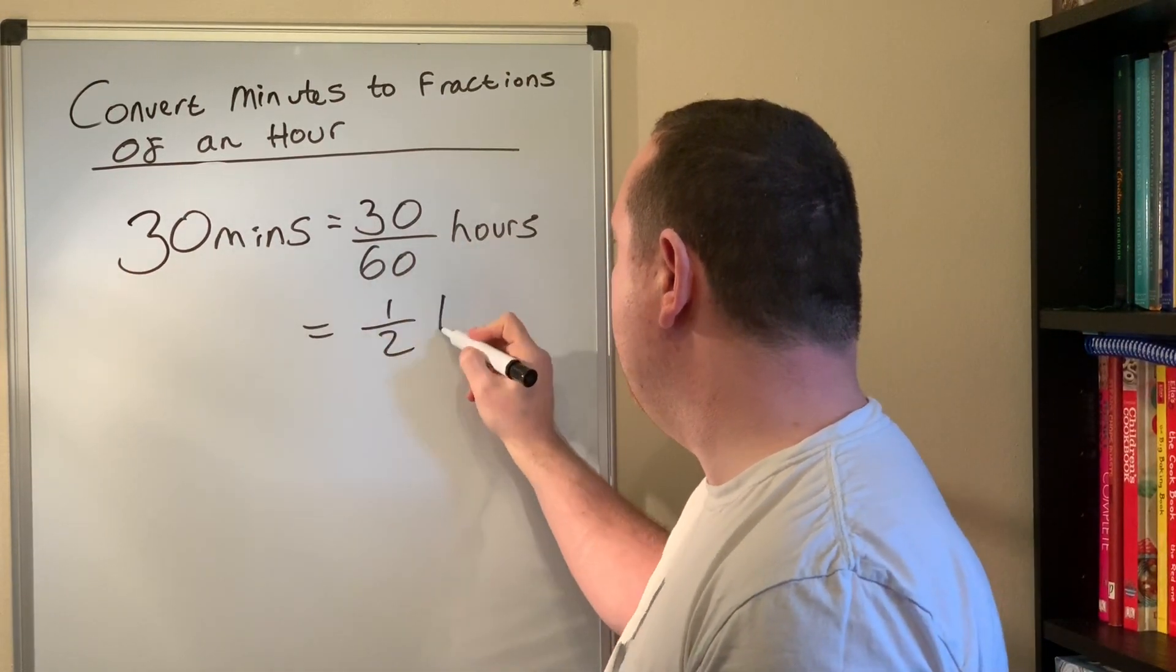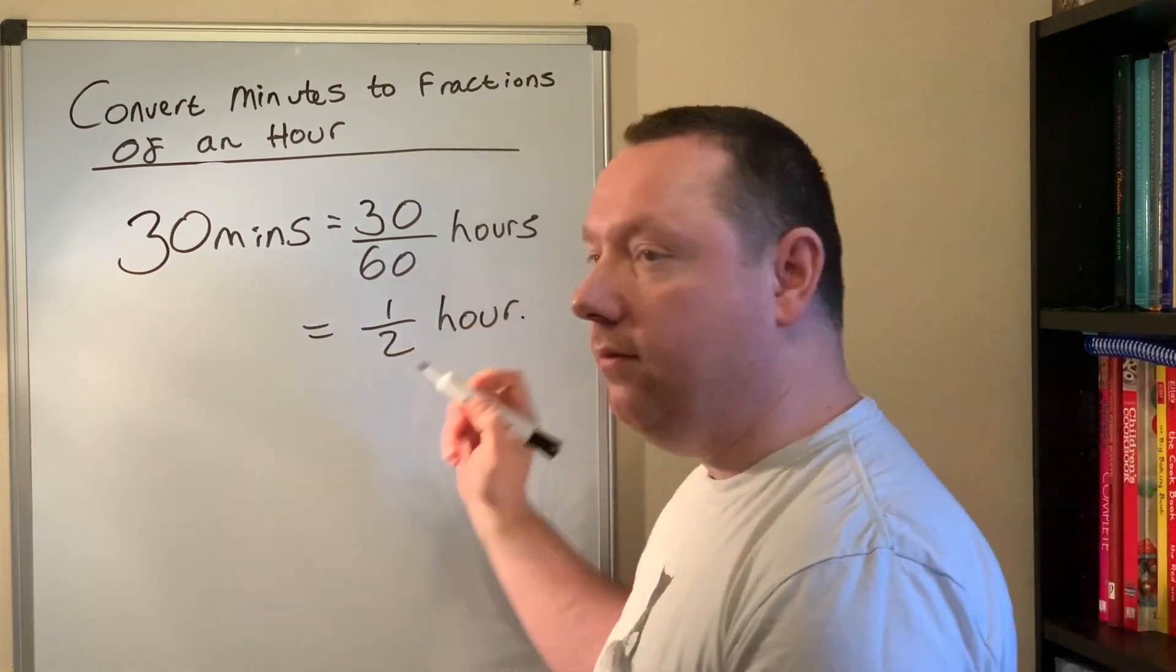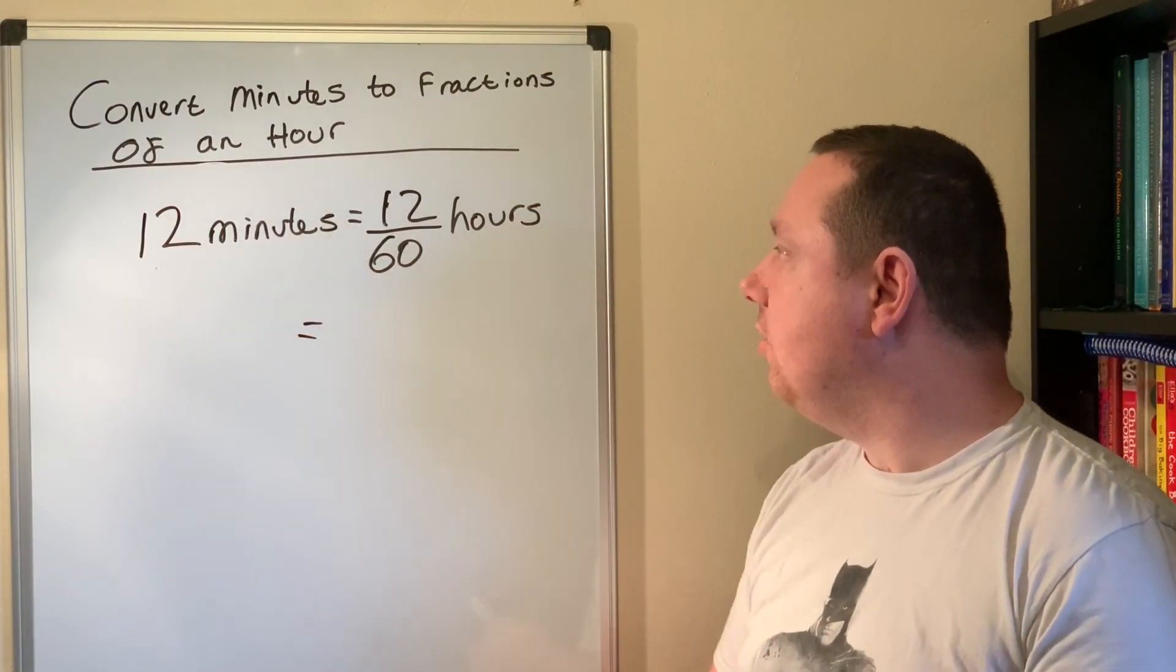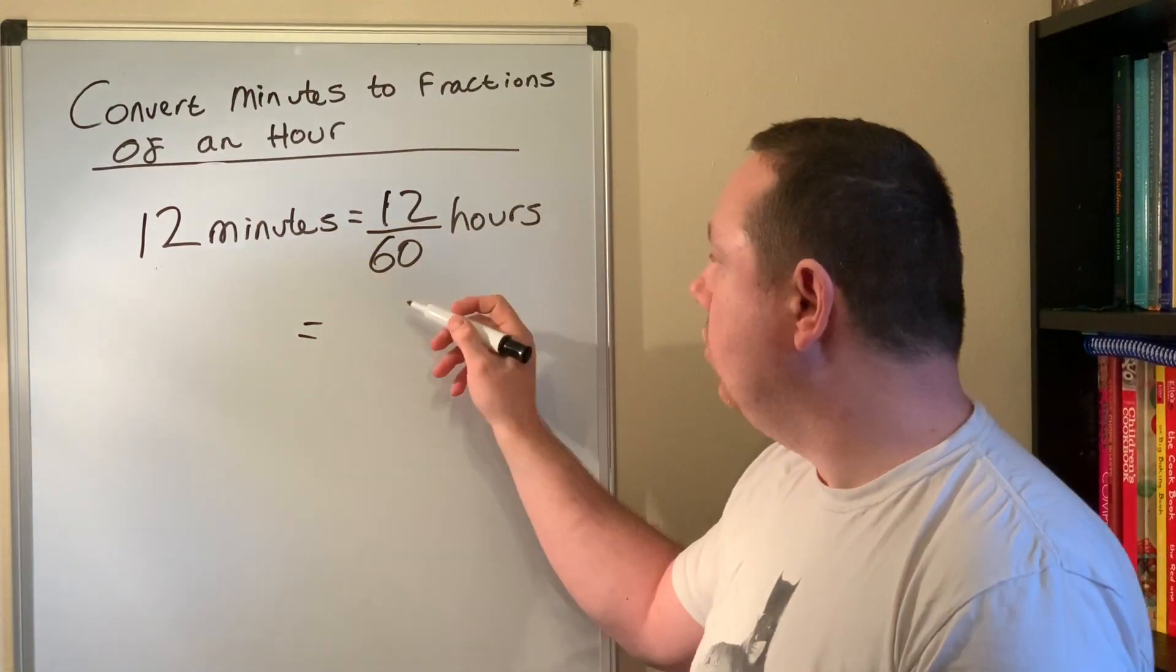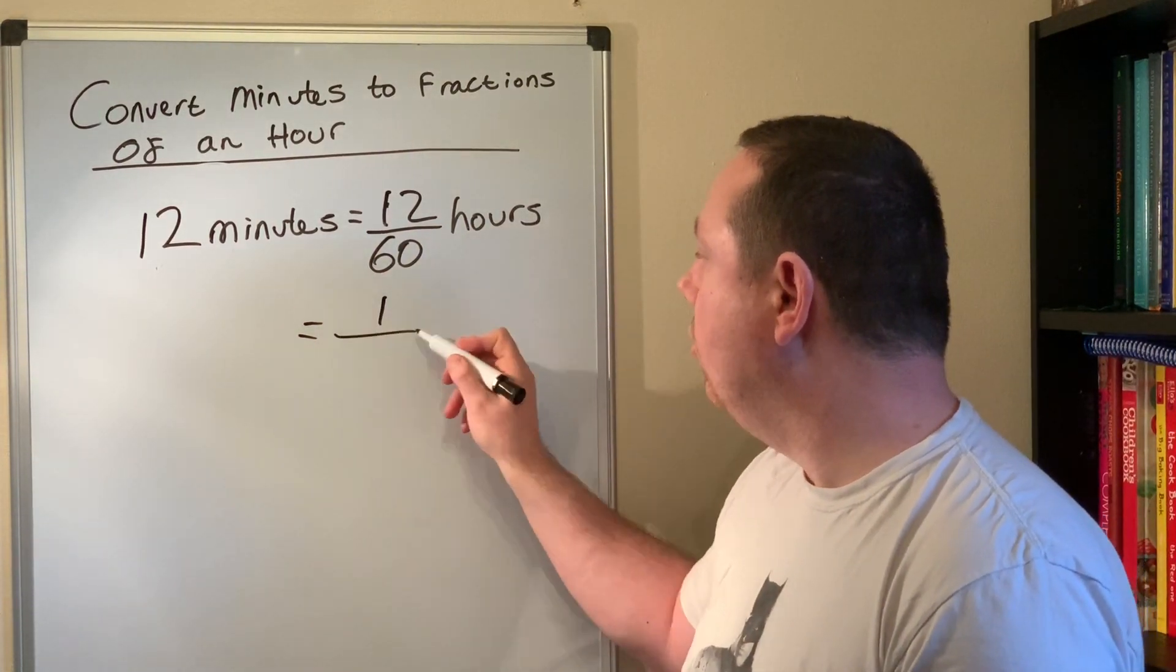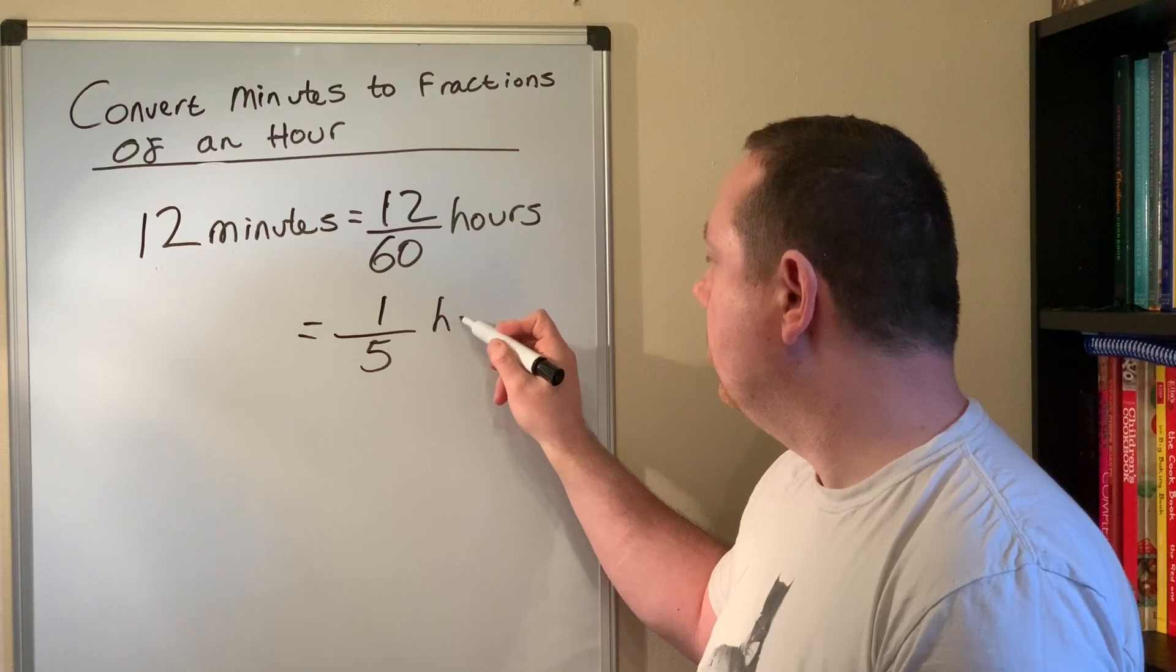I've got 12 minutes, that's 12 out of 60 hours, so I can divide the top and bottom by 12 to get 1 out of 5, a fifth hours.